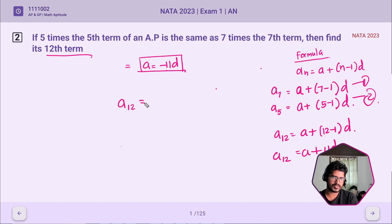So A12 = -11D + 11D. So -11D plus 11D will get cancelled. So A12 = 0.